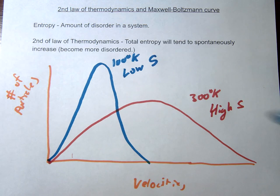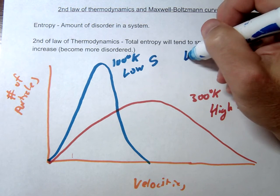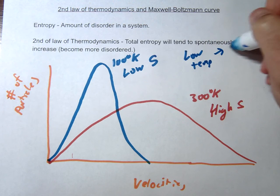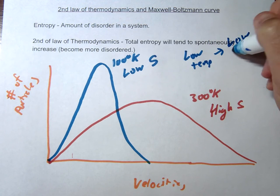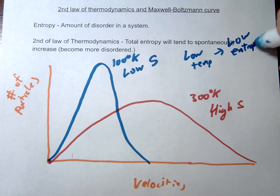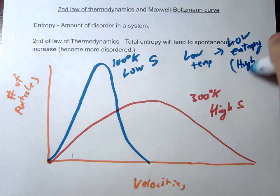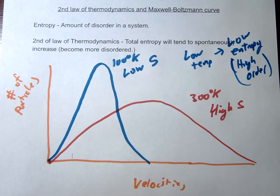So in general, you could maybe make a quick generalized statement that low temperatures is going to have low entropy. Or it's going to have high order, more ordered, fewer states.